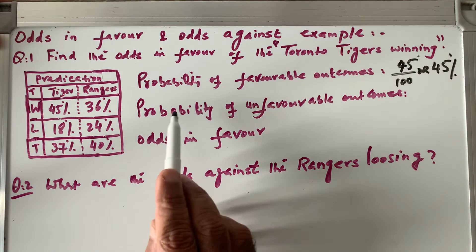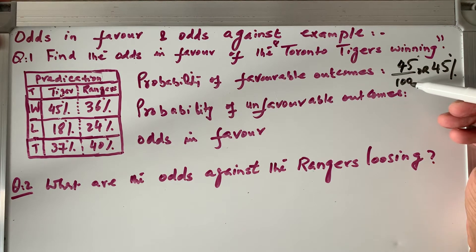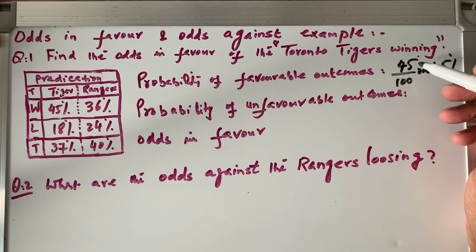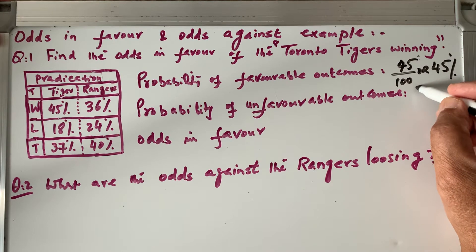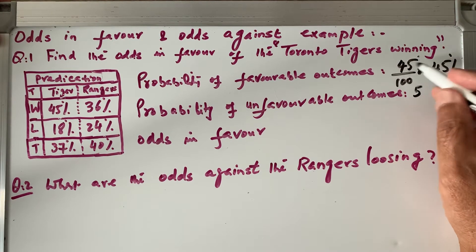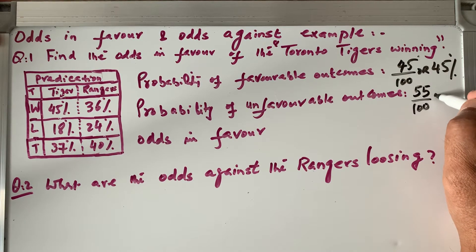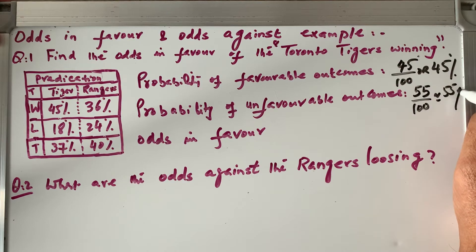The probability of unfavorable outcome: if the total outcome is 100 and 45 is for winning, then the unfavorable is 100 minus 45, which equals 55. So the unfavorable probability is 55%.